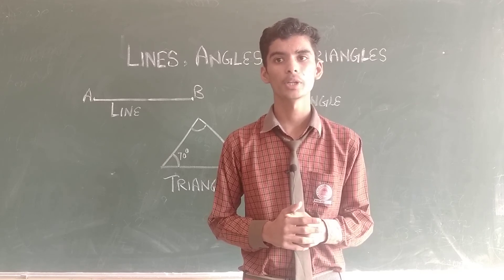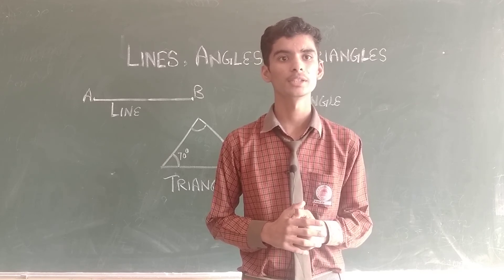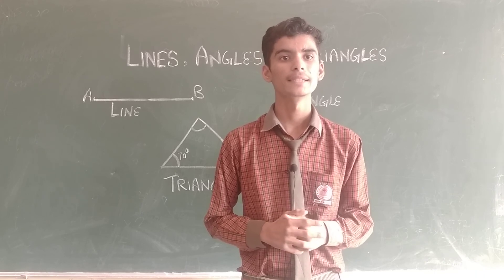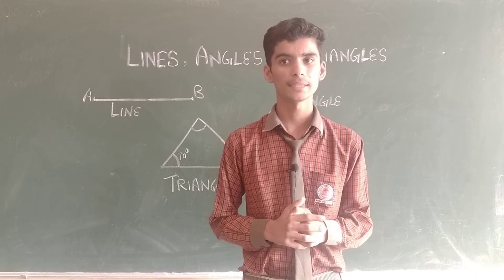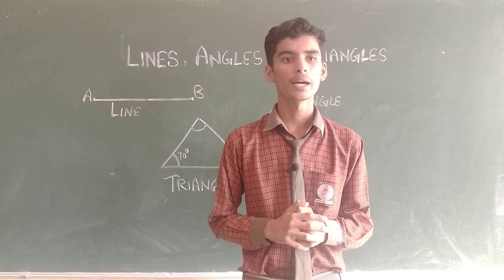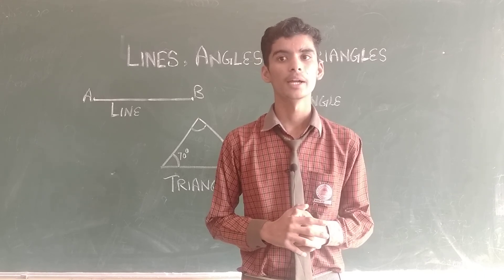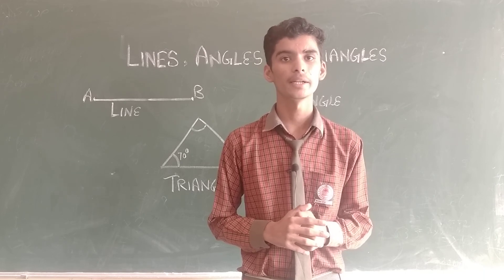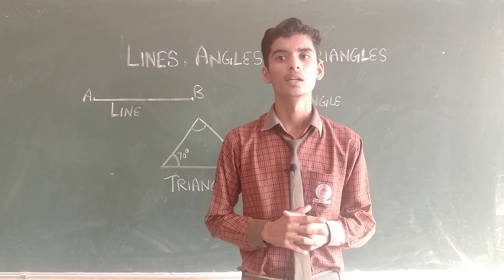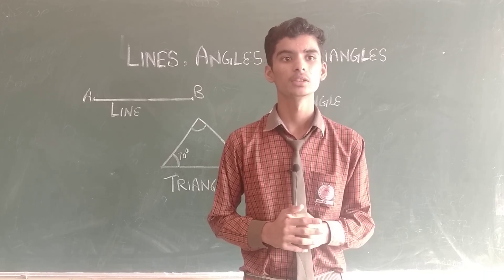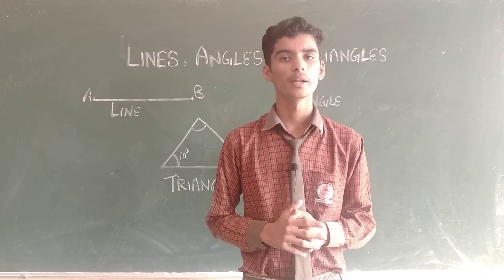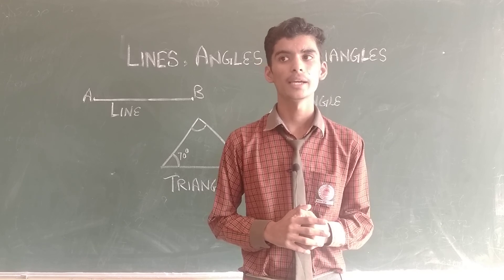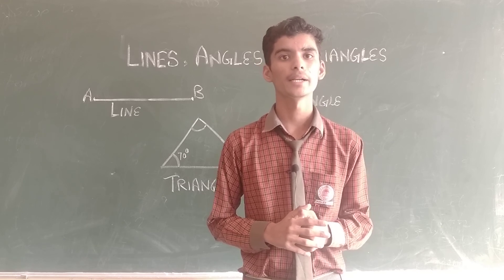Now there are some properties of congruency: SAS, SSS, RHS, and ASA. SSS stands for side-side-side. RHS stands for right angle-hypotenuse-side. ASA stands for angle-side-angle.